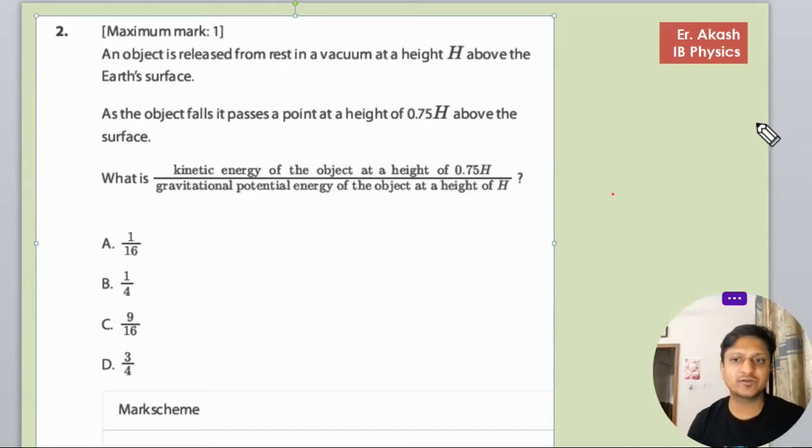Now we will be solving this question. The question says that an object is released from rest in a vacuum at the height h above the earth's surface.